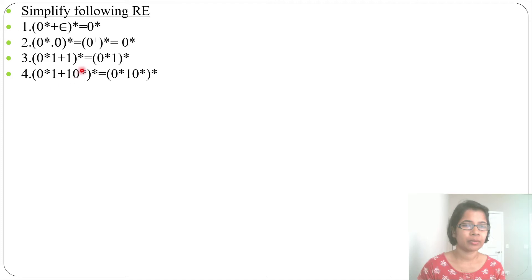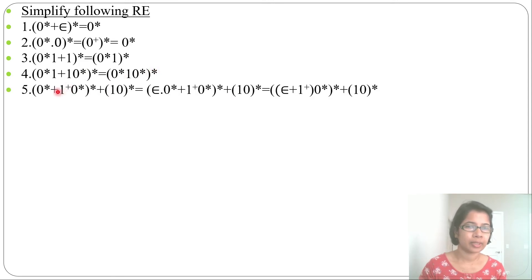For (0*·1 + 1·0*)*, if you write 0*·1·0*, then from this you can generate 0*·1 when the trailing 0* is epsilon, and you can generate 1·0* when the leading 0* is epsilon. So from 0*·1·0* you can generate both strings. That's why you can write (0*1 + 1·0*) as (0*1·0*)*. For (0* + 1+)* whole closure plus (1·0)* whole closure — you can write 0* as ε·0*, and 1+ · 0* is the same. Then you can take 0* as a common factor.